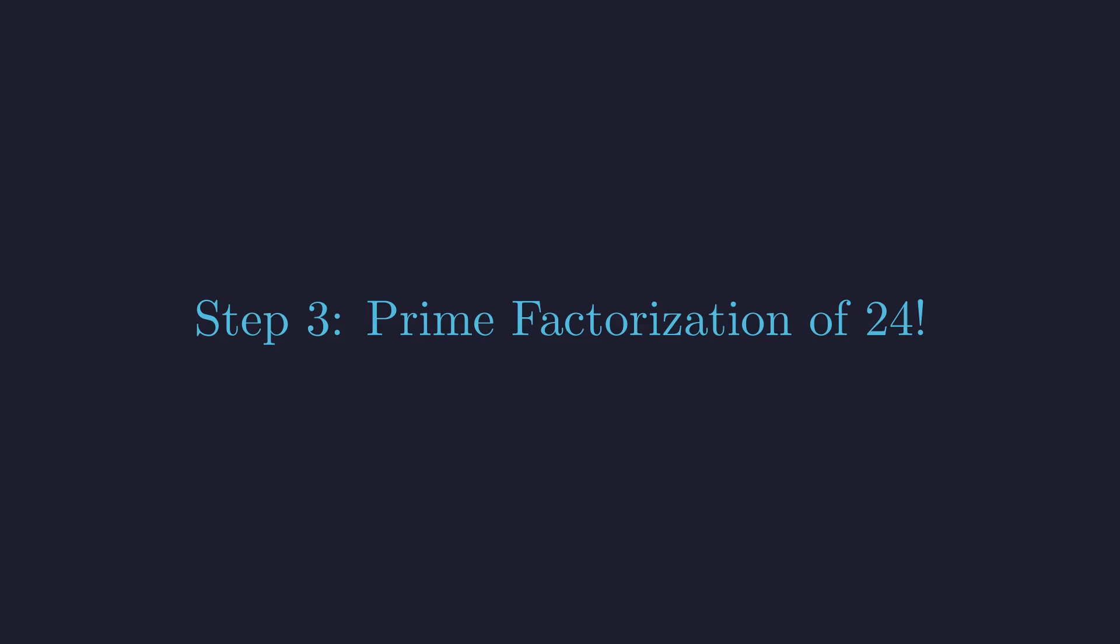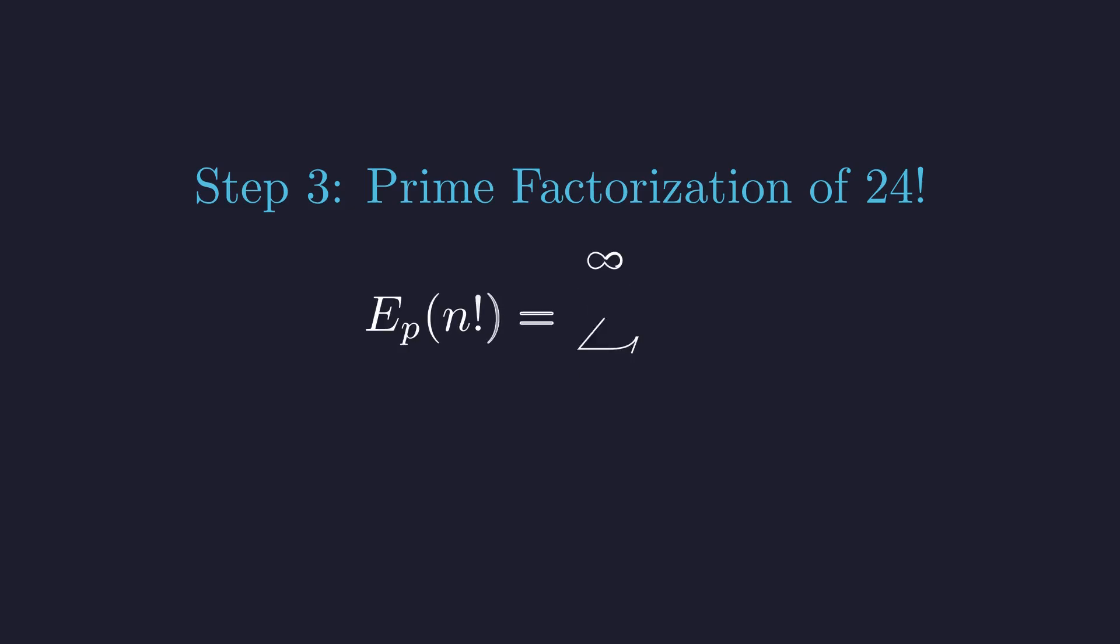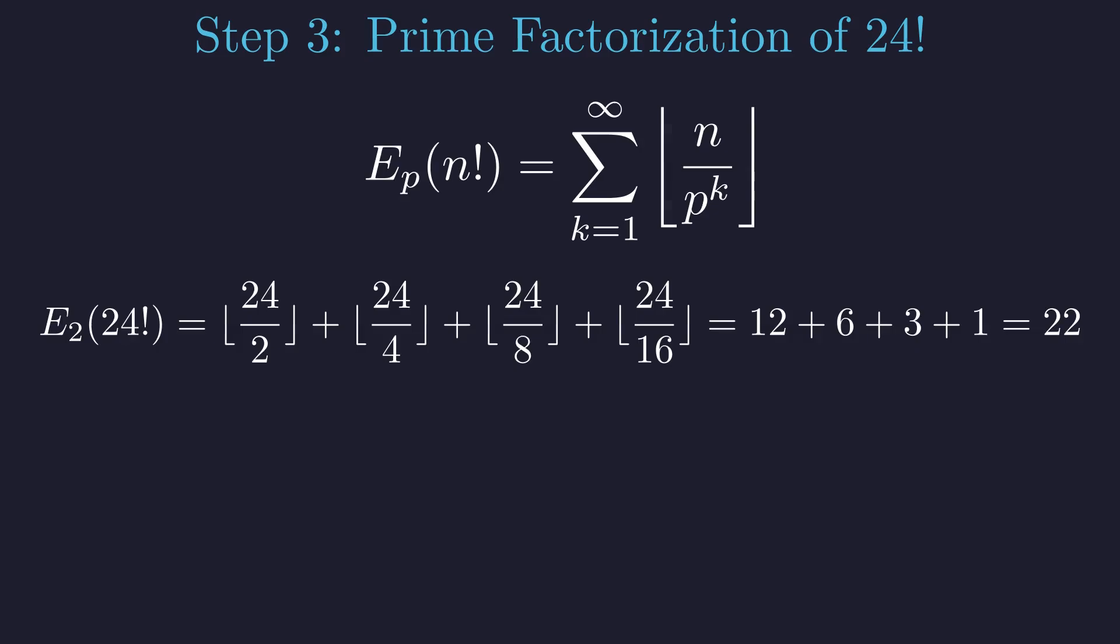To count divisors efficiently, we need to break 24 factorial down into its prime building blocks. There's a clever formula, discovered by Legendre, that tells us exactly how many times each prime appears in a factorial. Let's see how many times 2 divides 24 factorial. We get 12, then 6, then 3, then 1. Adding these up gives us 22.